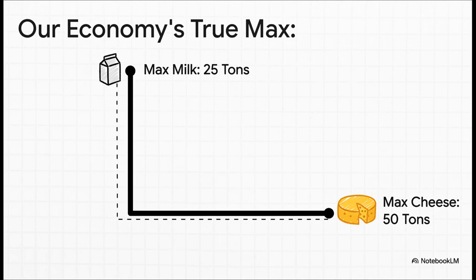So what this means is that the true maximums for our economy are 25 tons of milk because we run out of machines first, and 50 tons of cheese where, again, the machine constraint is the one that holds us back. That is our frontier.